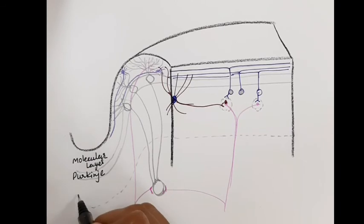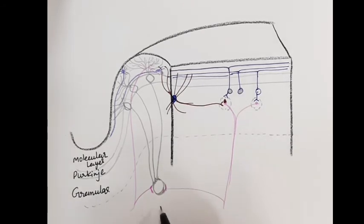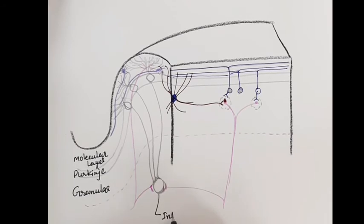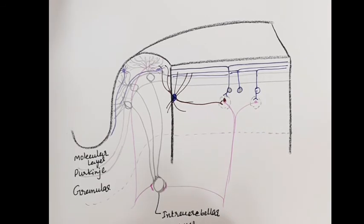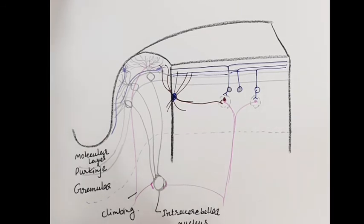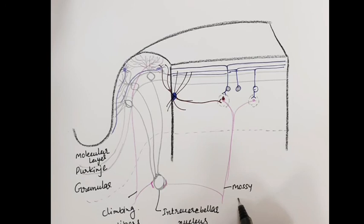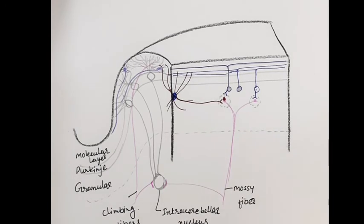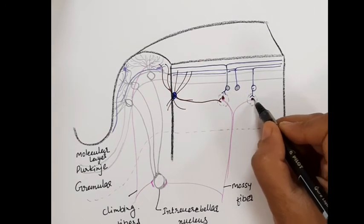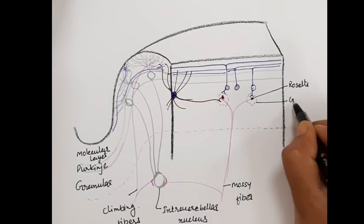The Golgi cell is the largest neuron of the cerebellum. The Golgi cell receives input from the parallel fiber and mossy fiber, which excite it, and also from the recurrent axon collaterals of the Purkinje cells, which inhibit the Golgi cells. It gives output to the dendrites of the granular cell. The Golgi cell is an inhibitory neuron and diminishes the excitation of the granular cells.